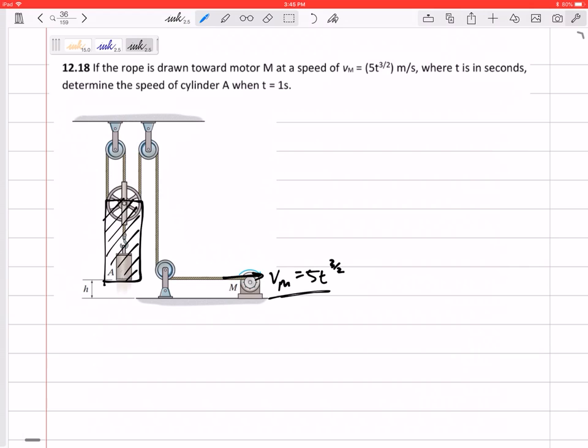All right, so let's write an equation for the length of the rope, L_total. So L_total, I'm going to call this L_A, something like this, this is L_M, and then maybe I'll just say kind of L_top to bottom. We'll see that later.